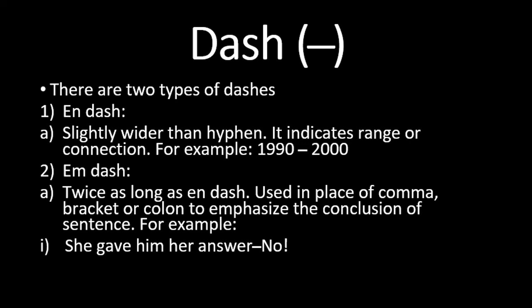The n-dash — the comparatively shorter dash — is used to indicate range and connection between two things, showing duration or relationship. For example, to indicate from 1990 to 2000, you can write '1990–2000' using an n-dash instead of writing 'TO'. The m-dash, on the other hand, is used in place of comma, bracket, or colon within a sentence.